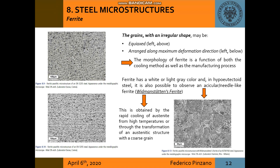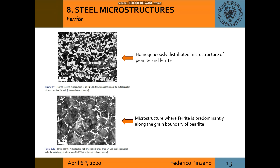The grains present regular shapes and can be equiaxed or arranged along the maximum deformation direction. Ferrite has a white or light grey color, and in hypo-eutectoid steel it is also possible to observe a circular needle-like ferrite called Widmannstätten ferrite. At the top is shown a homogeneously distributed microstructure of pearlite and ferrite, while below is a microstructure where ferrite is predominantly along the grain boundary of pearlite.